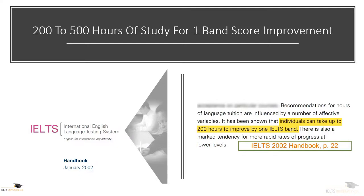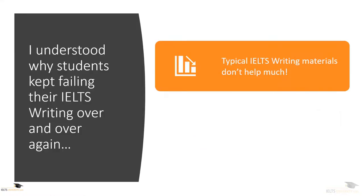Recently, I've been told by people in IELTS that this figure is probably closer to 400 or 500 hours. If we take these figures, that works out to be about 50 to 125 hours of study to improve by just one band for the IELTS writing alone. That's seriously a lot of time. With these two revelations, I started to realize why students kept failing their IELTS writing. Firstly, typical IELTS writing materials just tell you how to organize and structure an essay, but that's not good enough.